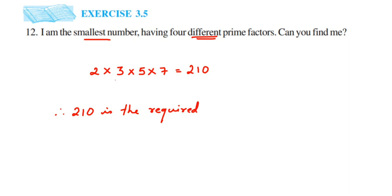Since the question specifies different prime factors, if it had not said different, we could have taken 2 × 2 × 2 × 2 instead. Also, we don't take 1 here because 1 is not a prime number — it's a composite number. Prime numbers start from 2, so our first four primes are 2, 3, 5, and 7.